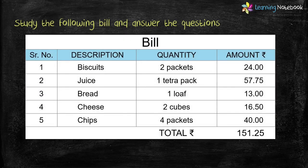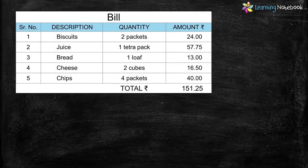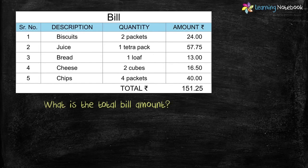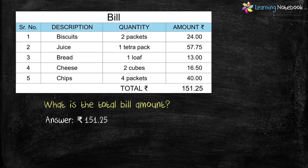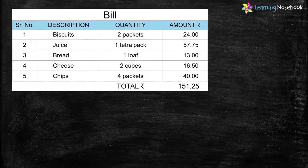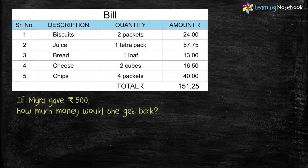Study the following bill and answer the questions. This bill consists of serial number, description, quantity, and amount of each item purchased. Question one: what is the total bill amount? As you can see in this bill, the total amount is rupees 151.25.